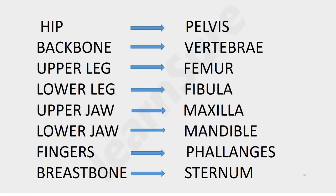Hip bone — the scientific name is pelvis. Backbone — vertebral column. Upper leg — we call it femur. Femur is the biggest bone in our body. Lower leg — we call it fibula.